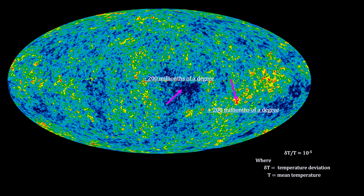That temperature deviation comes to one part in 100,000. These temperature deviations come from small mass density deviations in the plasma at the time of decoupling.